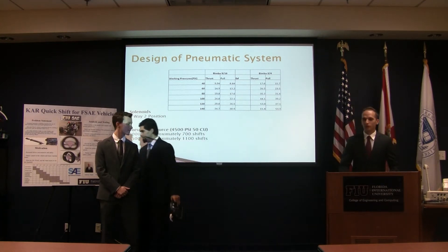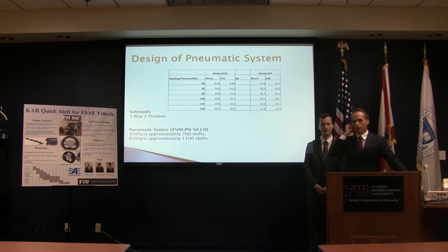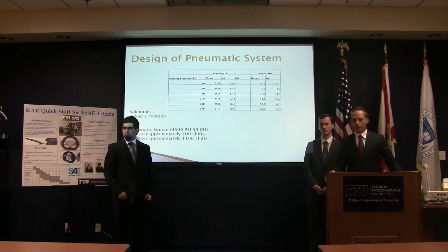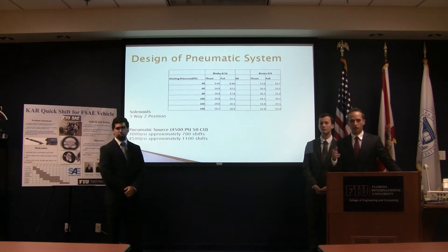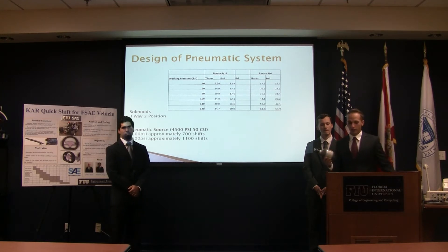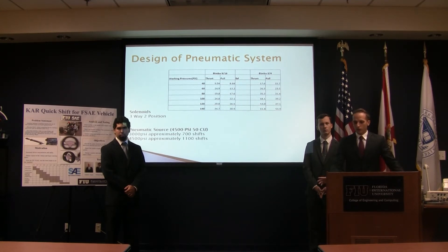We're going to jump right into designing the pneumatic system. We know that we need 20 pounds of force to shift. After narrowing down the choice of cylinders between 3/4-inch and 9/16-inch, a quick view of the table tells us that the 3/4-inch cylinder gives us more room for flexibility and error. We have a 2-inch stroke, with 1 inch on each side. We have a 3-way 2-position solenoid, normally closed. For the pneumatic source, we chose a high-pressure paintball tank from Ninja: 50 cubic inches with a maximum pressure rating of 4,500 psi. There are two variables determining the number of shifts — operating pressure and tank fill pressure. Filling to 3,000 psi gives approximately 700 shifts; filling to 4,500 psi gives approximately 1,100 shifts.